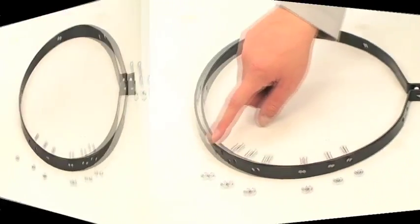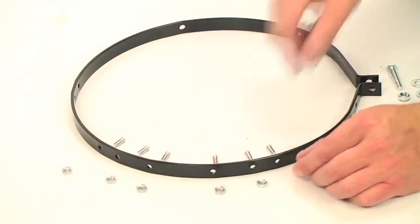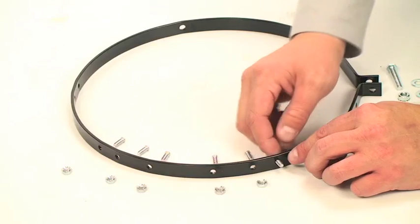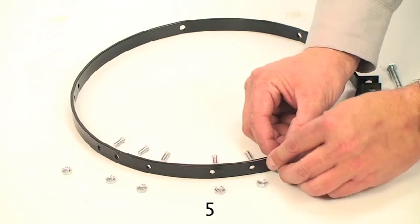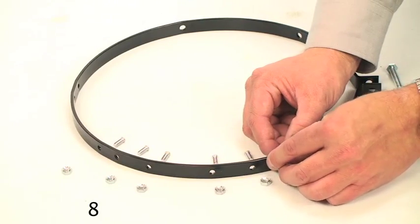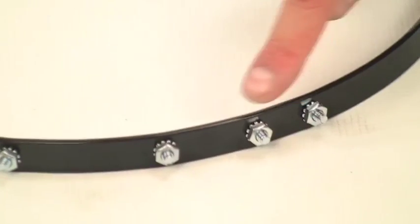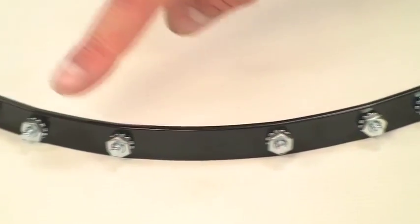Counting from right to left and starting from the flange, insert a number ten half inch clinch stud in holes three, four, five, six, seven, and eight. Make sure the studs are pointing at you and hand tighten with supplied 3/8 inch nuts.